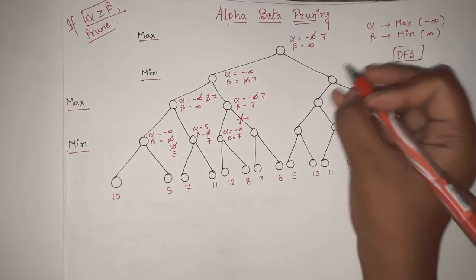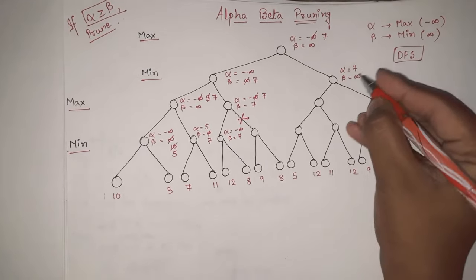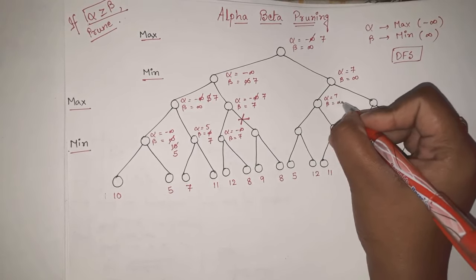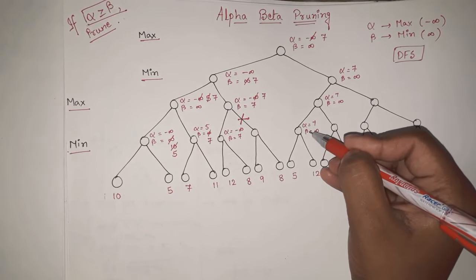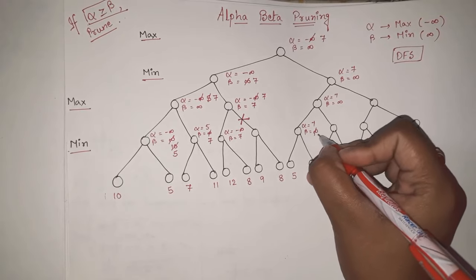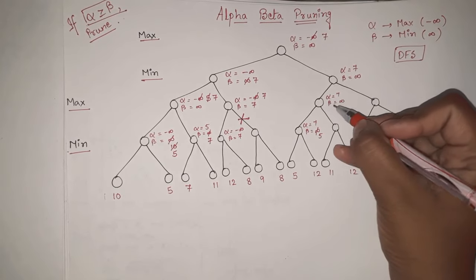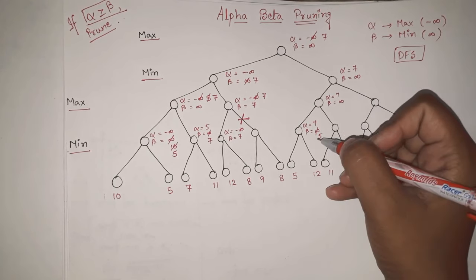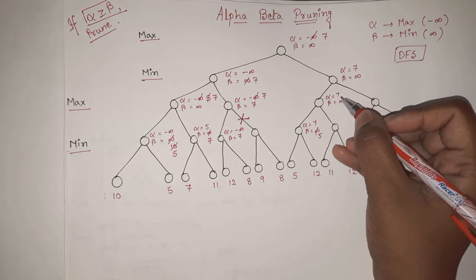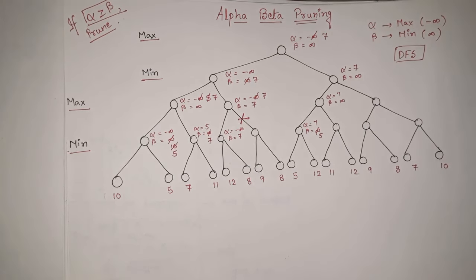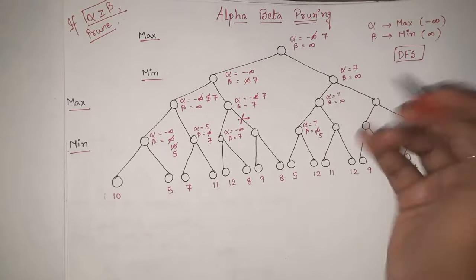After that, the value is forwarded: alpha equal to 7 and beta equal to infinity. The same is copied downward: alpha equal to 7, beta equal to infinity. Here the leaf value is 5, which is a min node, so beta is updated. Out of infinity and 5, the smaller value is 5. Then out of 5 and 12, 5 is smaller, so the final beta value is 5. Going back up — it is max, so alpha is updated. Out of 7, 7, and 5, the maximum is 7, so it stays as is.